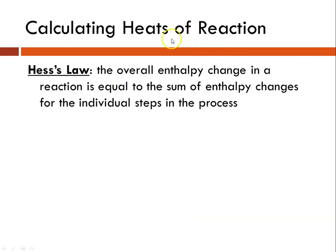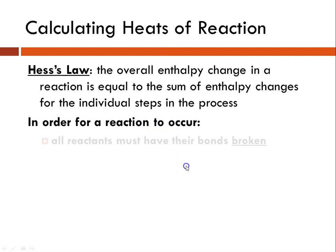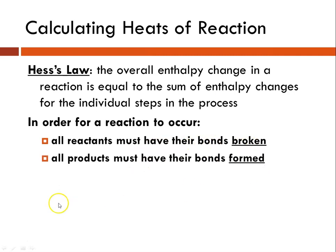Calculating the heats of reaction, we use something called Hess's law, which states that the overall enthalpy change in a reaction is equal to the sum of the enthalpy changes for the individual steps in the process. In order for a reaction to occur, all the reactants have to have their bonds broken, and all the products must have their bonds formed anew.